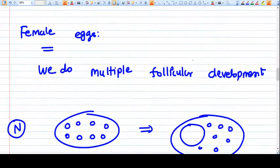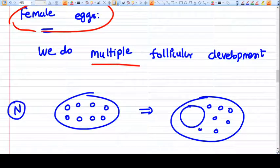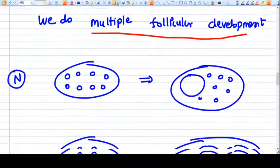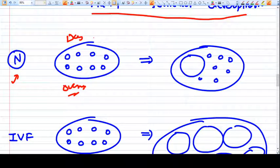Now how do we do this? How do we get female eggs? What we do in IVF is multiple follicle development. Normally, this is the ovary of any patient and these are the ovarian follicles in the early follicular phase. At the end of the follicular phase, one dominant follicle develops while others become atretic.